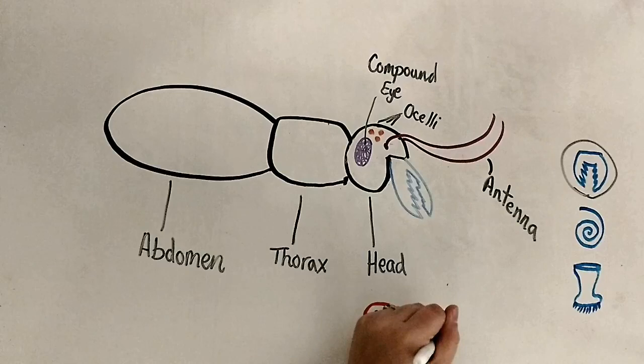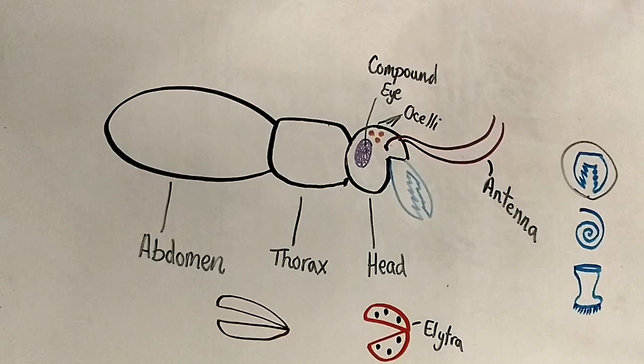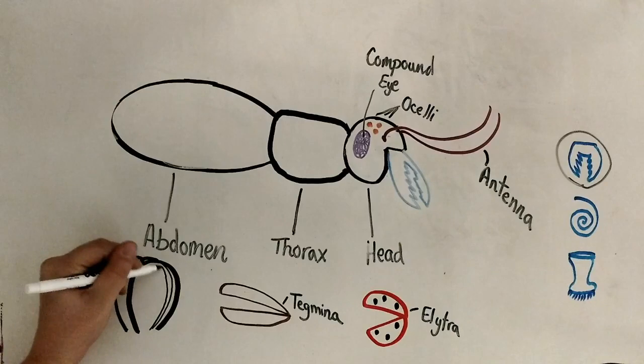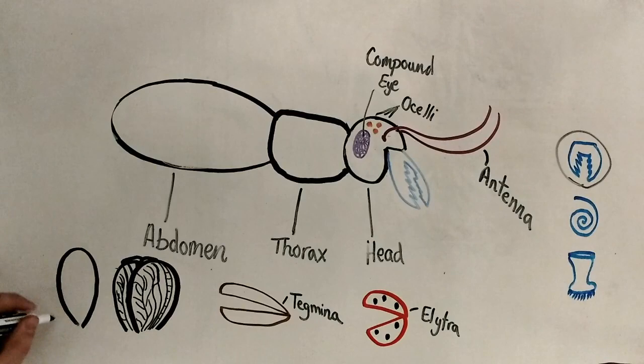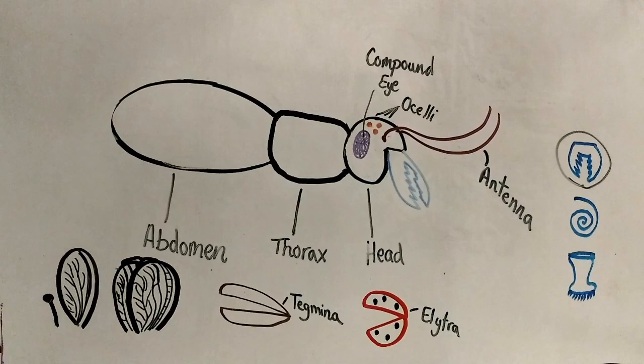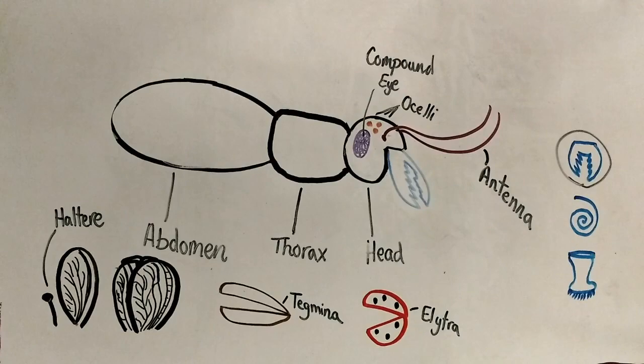Grasshoppers and cockroaches also have a modified first pair of wings. Their first pair of wings are leathery and opaque — these are called tegmena. Dragonflies and bees have membranous wings that are very thin, transparent, and show the wing veins. Flies have the most peculiar wing adaptation: they are the only ones with a single pair of wings. Their second pair have adapted into appendages that help them balance and manipulate their flight — these are called halteres. Our insect has membranous wings.